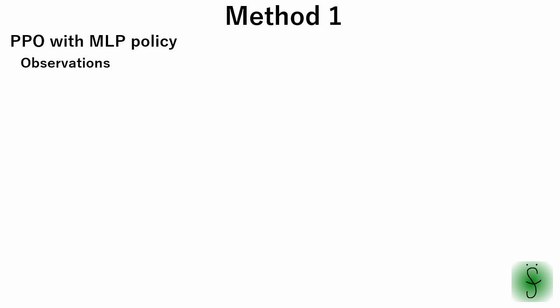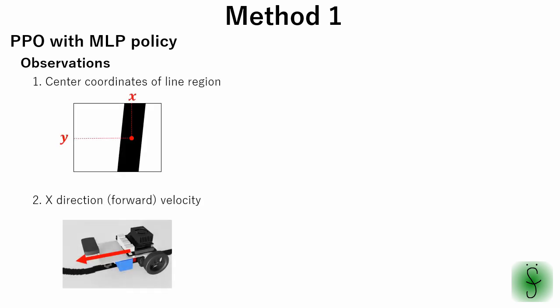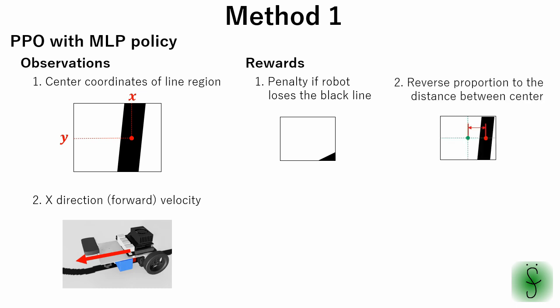We will solve this problem using two methods. The first method is using a PPO algorithm with multilayer perceptron network. As an observation, we will use center coordinates of the line region and robot x-direction velocity. As rewards, we will give a negative reward if the robot loses the black line from its sight. A positive reward is given in reverse proportion to the distance between the center of the black line region and the center of the image.